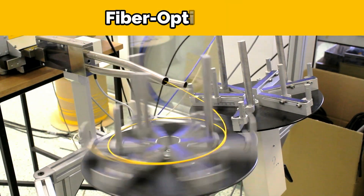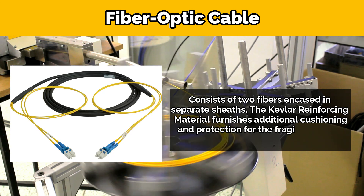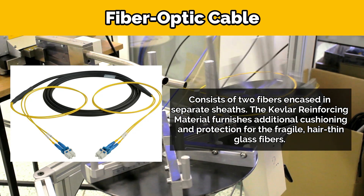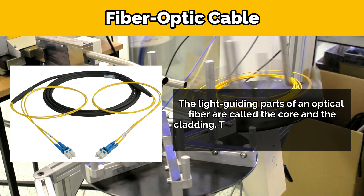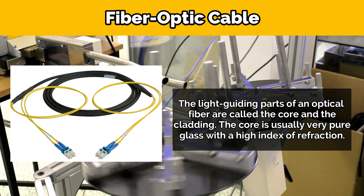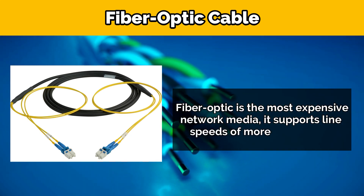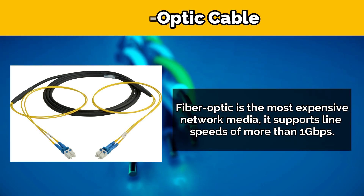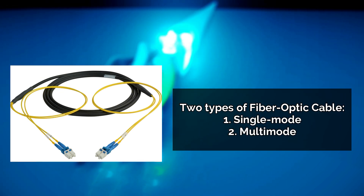Fiber optic cable consists of two fibers encased in separate sheaths. The Kevlar reinforcing material furnishes additional cushioning and protection for the fragile, hair-thin glass fibers. The light-guiding parts of an optical fiber are called the core and the cladding. Fiber optic is the most expensive network media, supporting line speeds of more than one gigabit per second. The two types are single-mode and multi-mode.